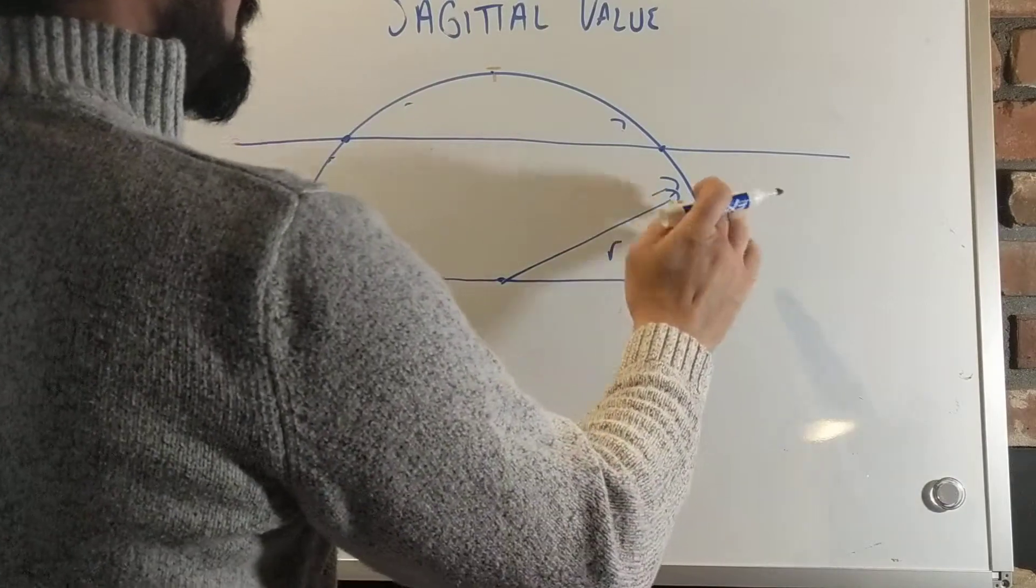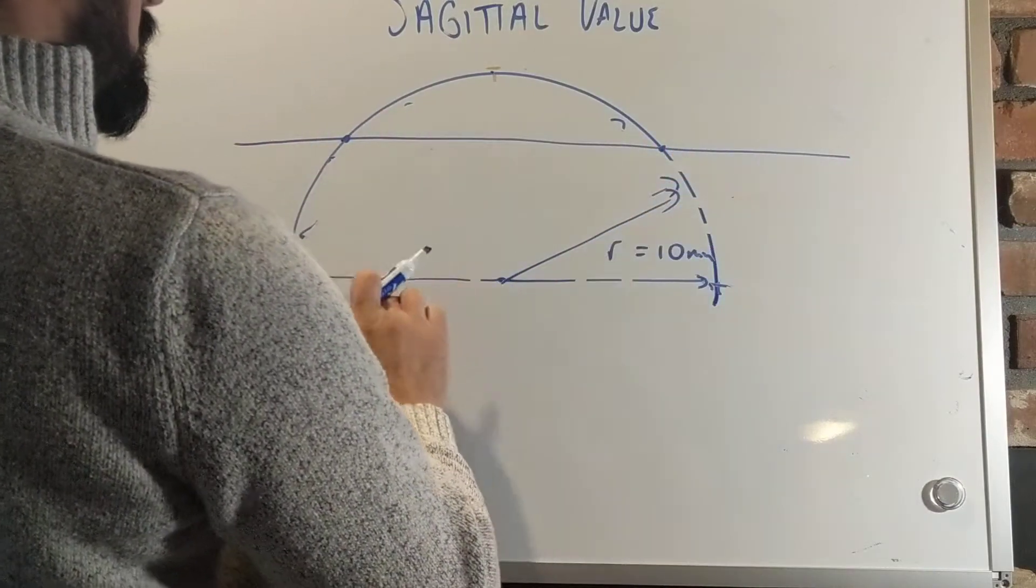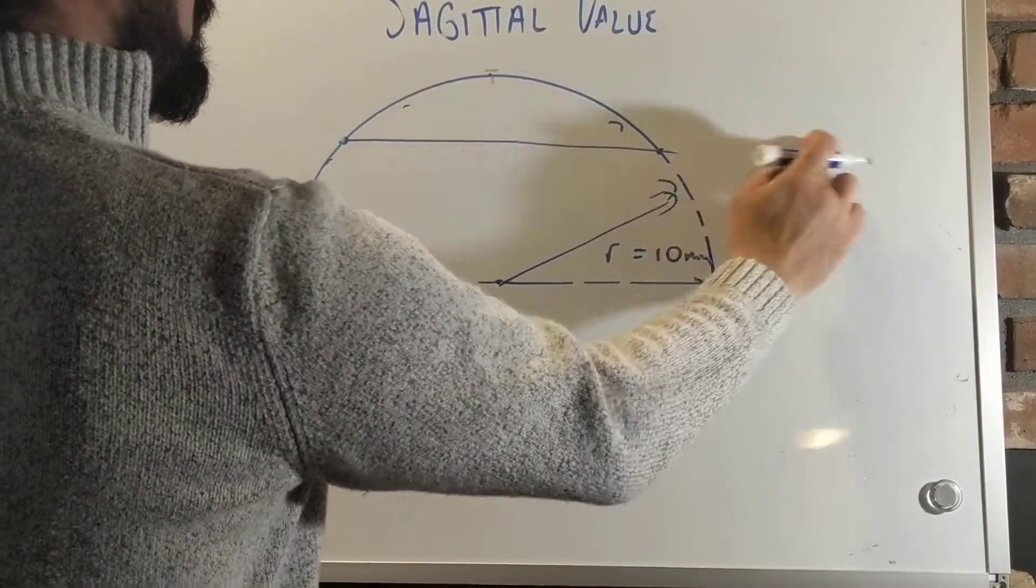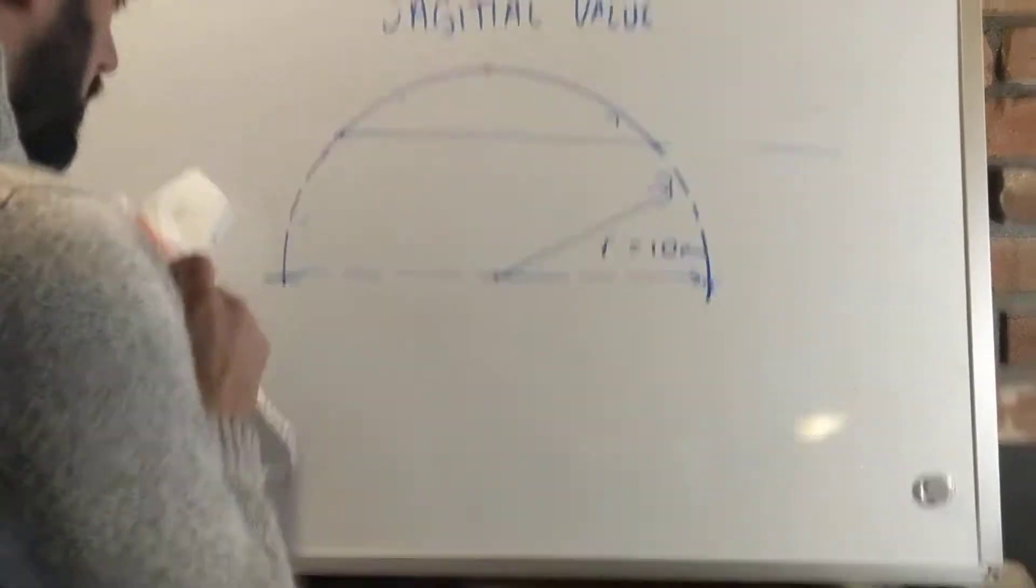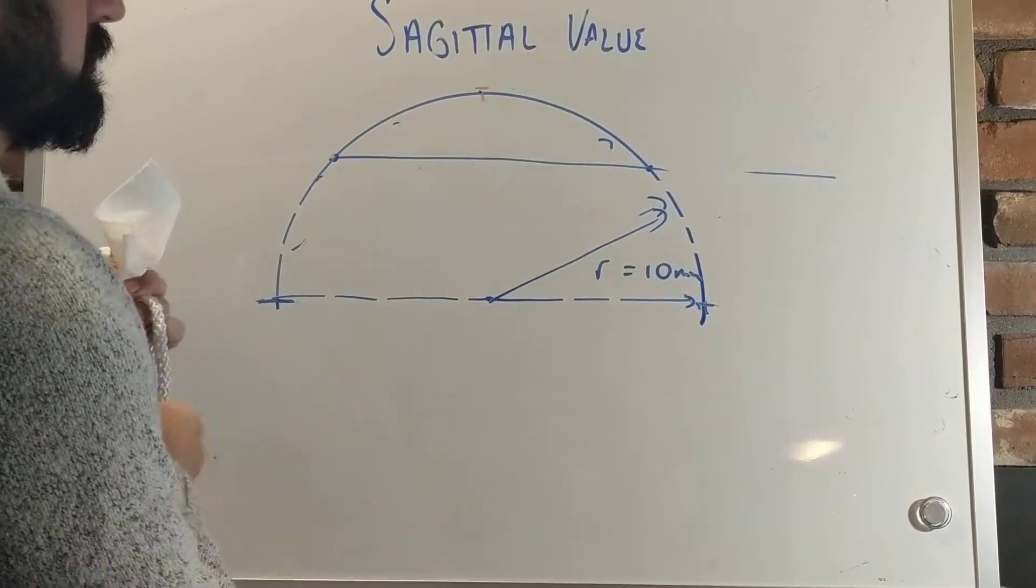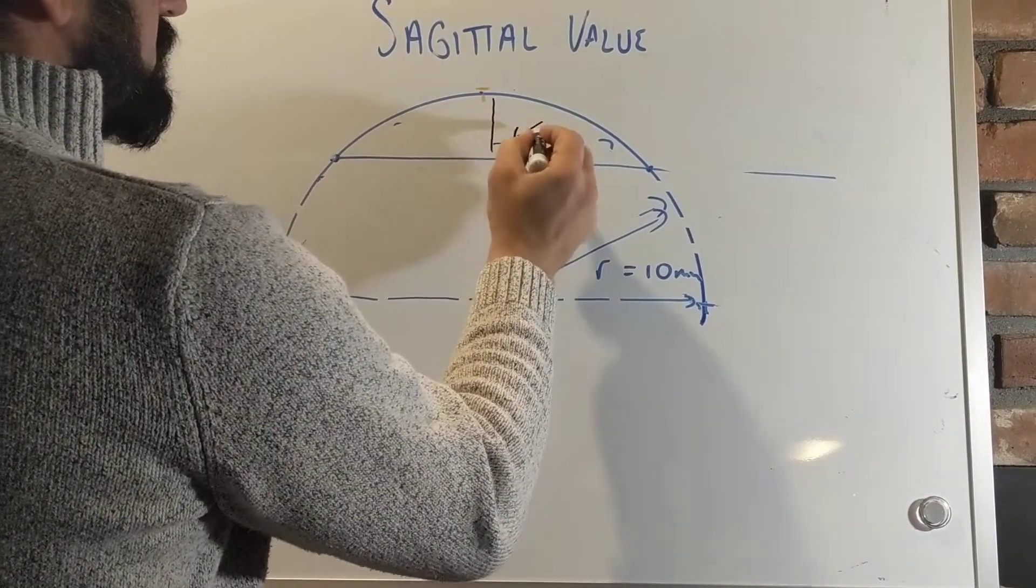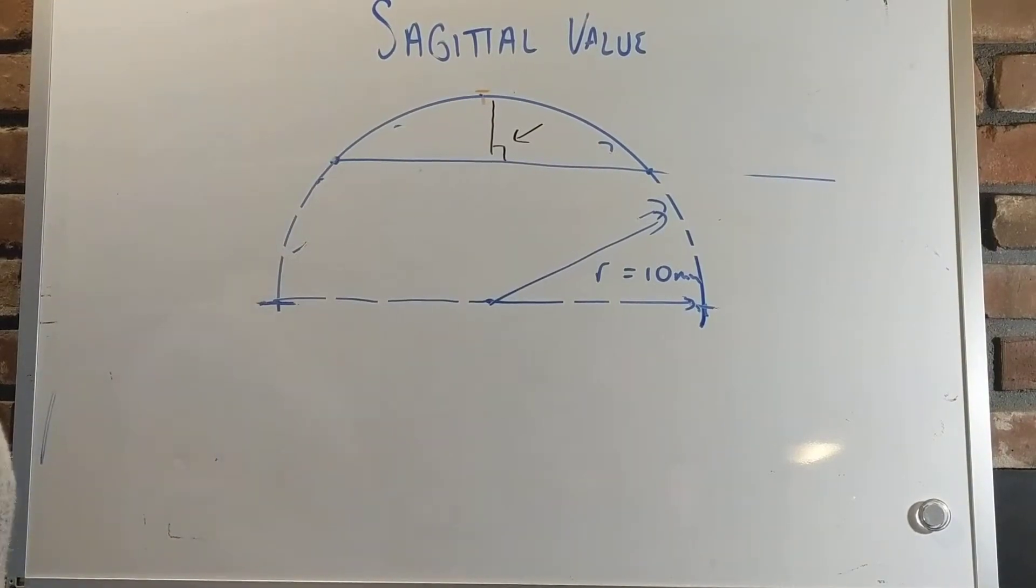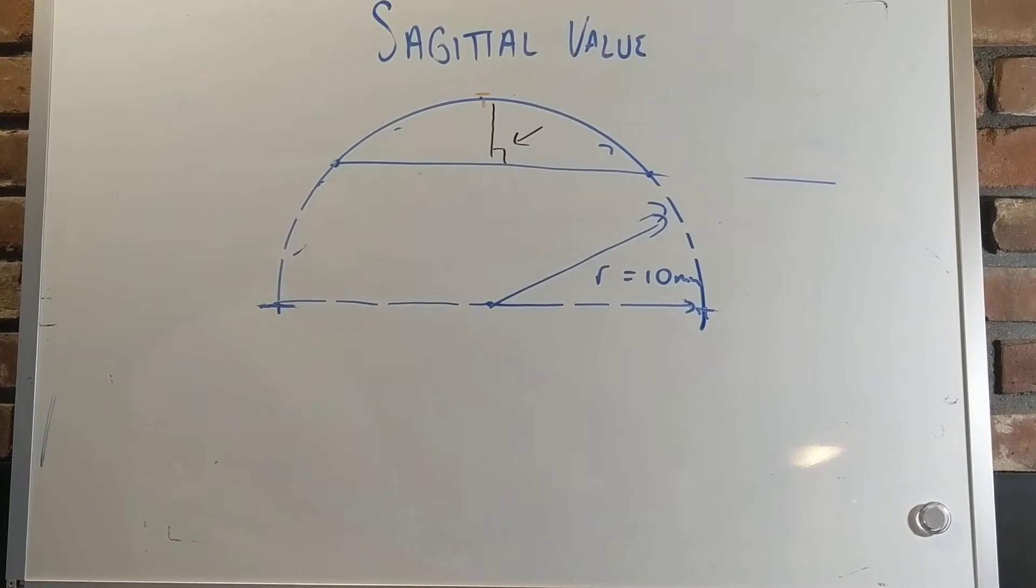Well, if everything else, this was not here, and we were left with this shape here, from here to here to here, our question is, how deep or what is this measurement right there? This, right there, if you take a segment off of a circle, off of a sphere, this would be your sagittal value.